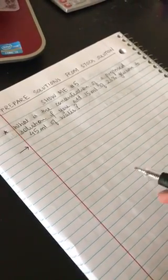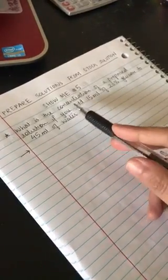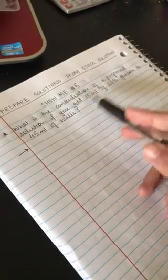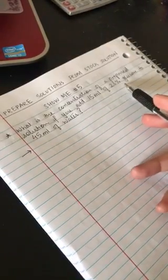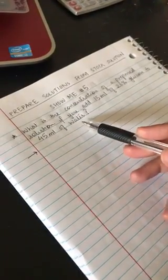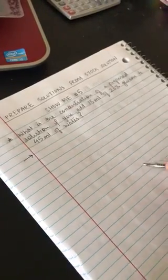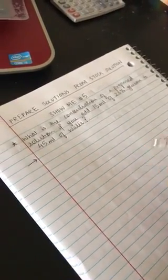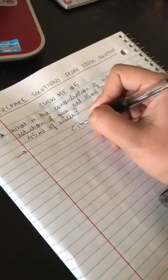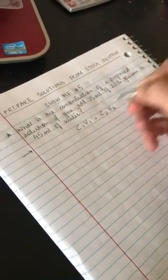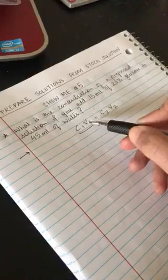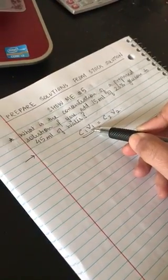Okay, so today we are going to prepare solutions from stock solution. The question is: what is the concentration of a prepared solution if you add 15 ml of 20% glucose to 45 ml of water? Now these types of problems have one formula which is C1V1 equals C2V2.